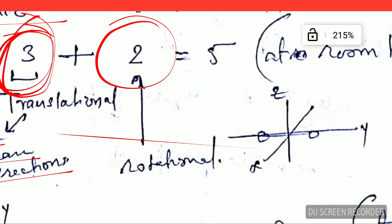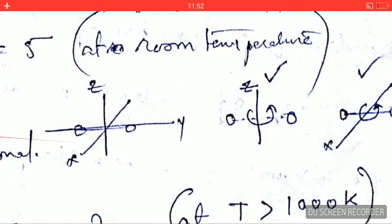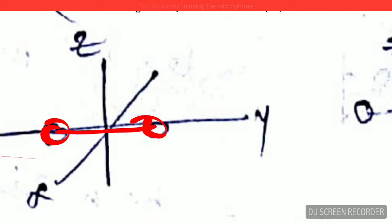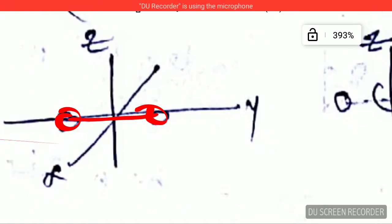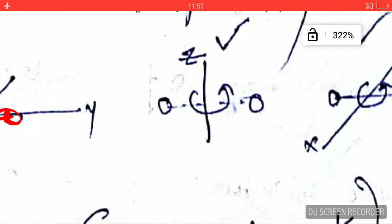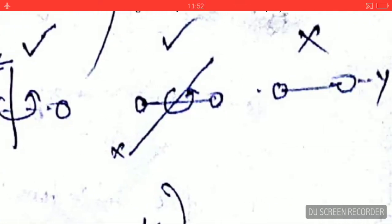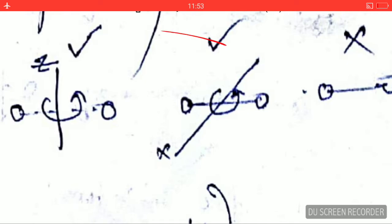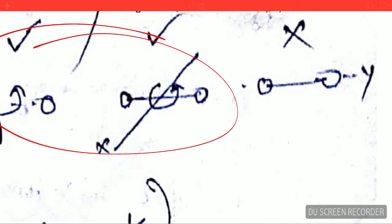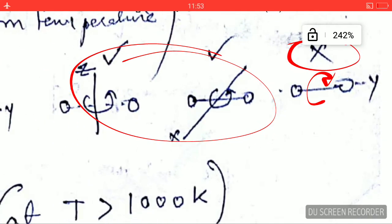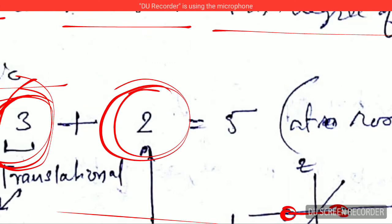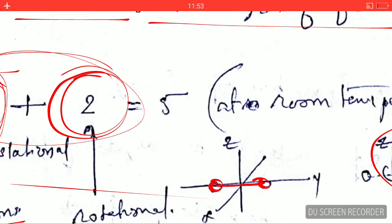To understand why there are two rotational degrees of freedom: the diatomic molecule is placed along the Y axis. This molecule can rotate about the Z axis, giving one rotational degree of freedom, and it can also rotate about the X axis, giving a second. However, rotation along the Y axis is invalid and cannot be taken into consideration. So it will have only two rotational degrees of freedom.